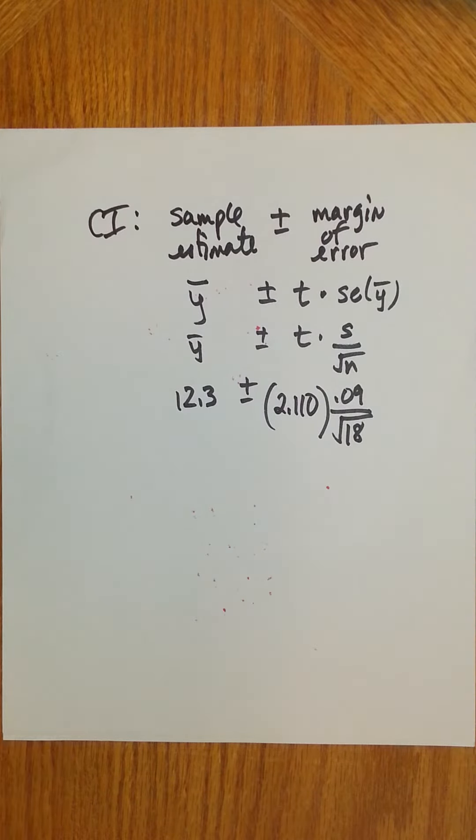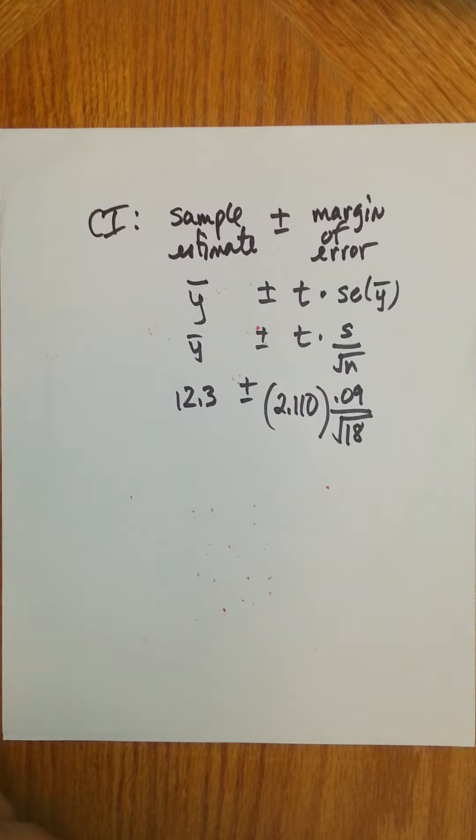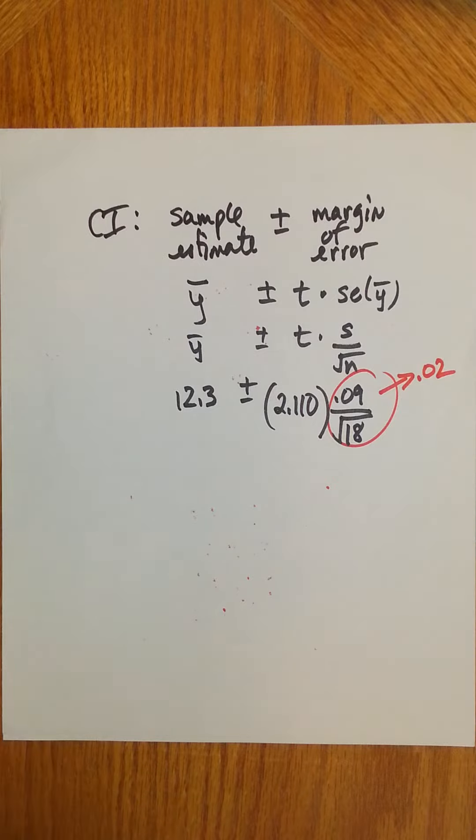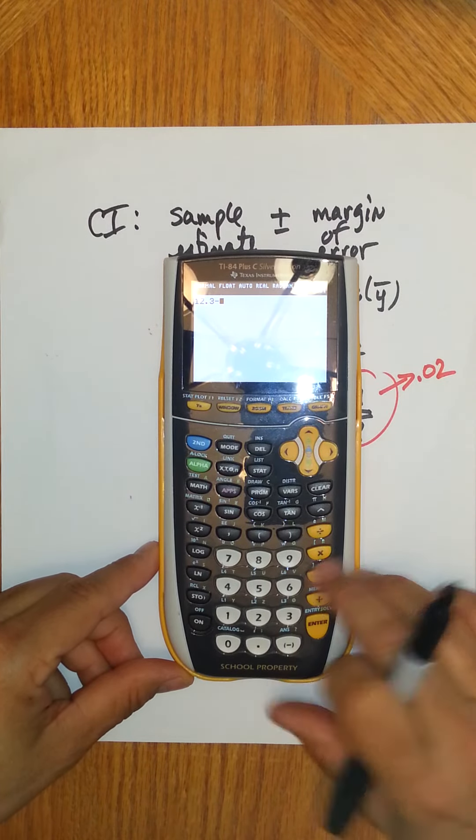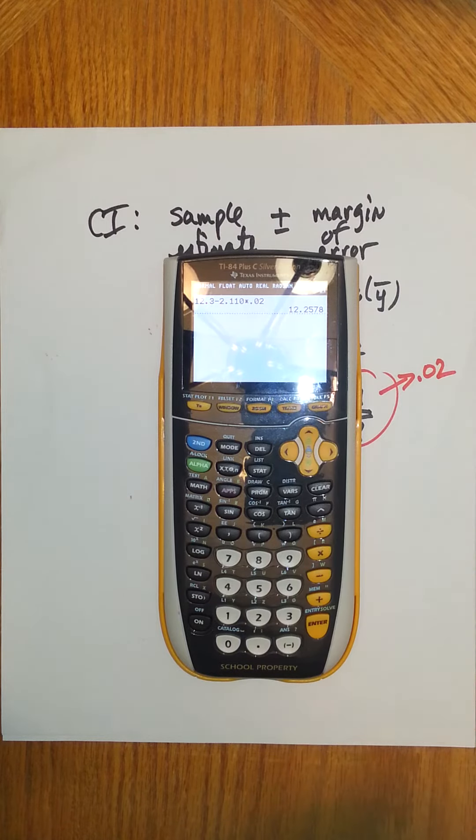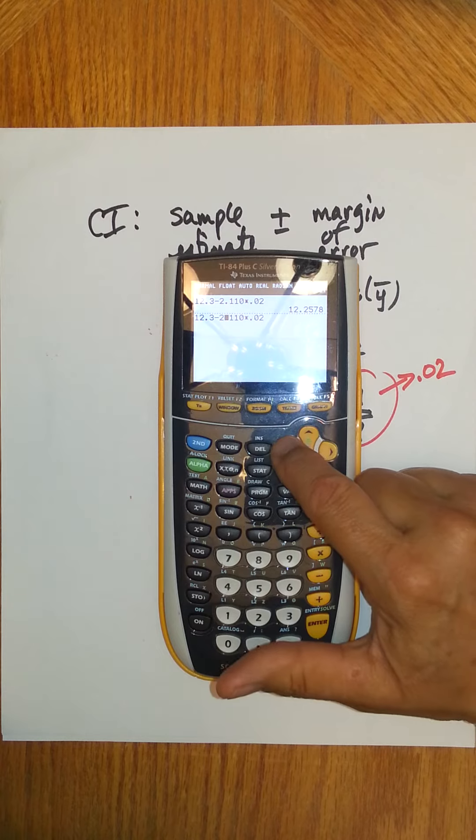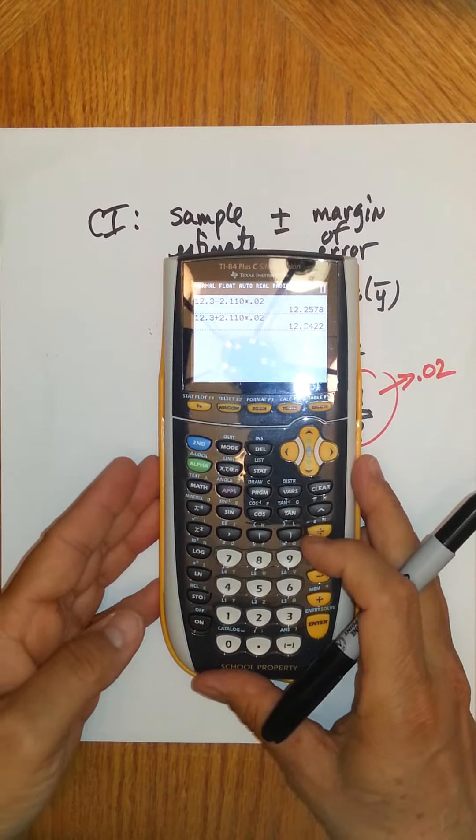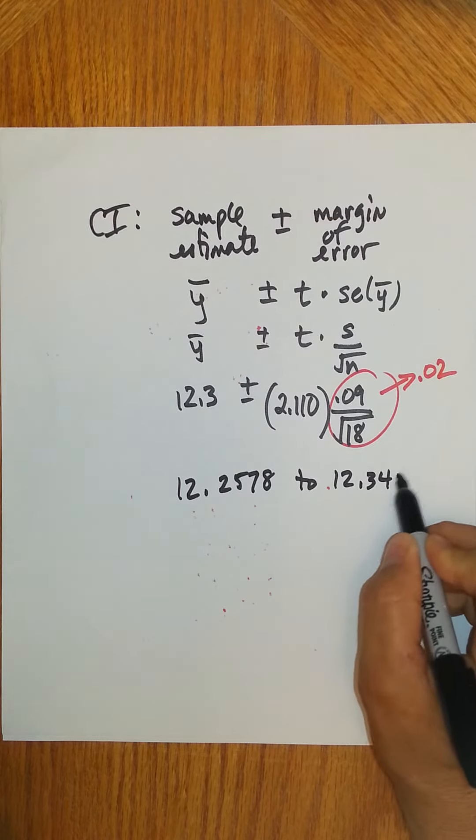Generally what you can do is, I go ahead and find what is 0.09 divided by square root 18, this piece right here is 0.02. And then I kind of like to put it in all at once. It's 12.3, and I'll do the lower end minus 2.110 times 0.02. I'll get the first value, 12.2578, and then I'll recall the entire line by pressing 2, enter, and I'll just back key until I'm on top of the minus sign, I'll overwrite with the plus sign, and then press enter, 12.34.